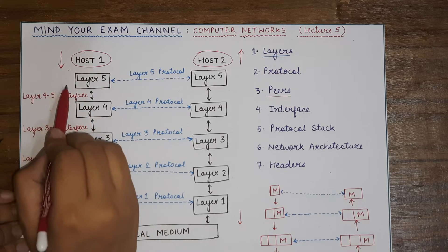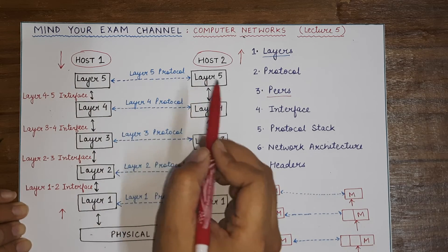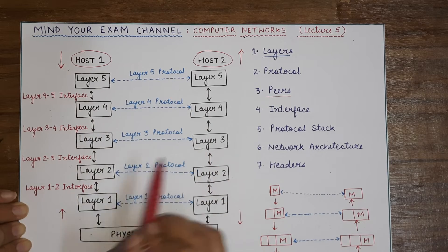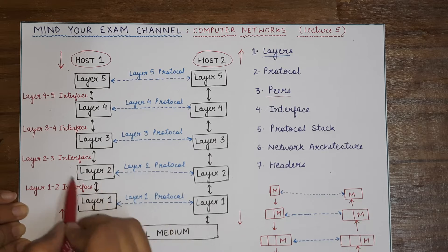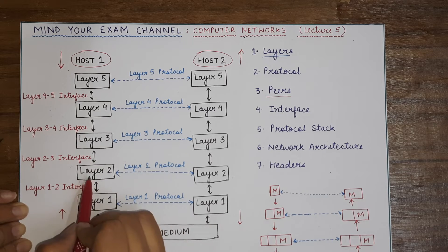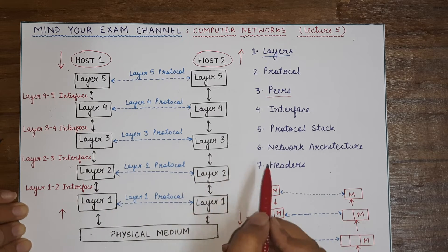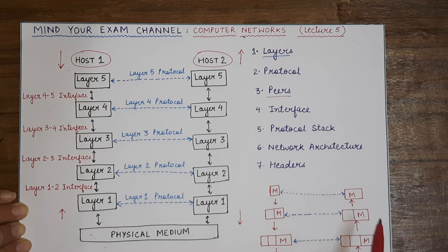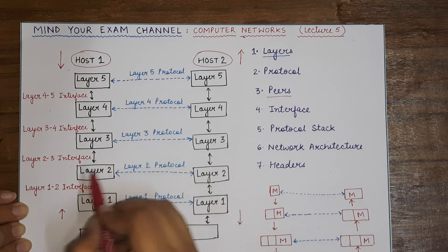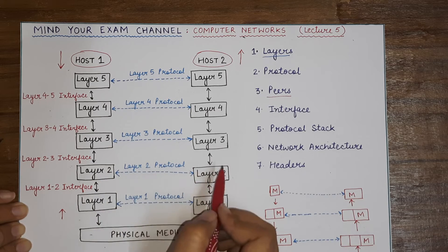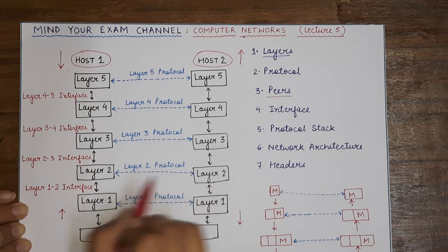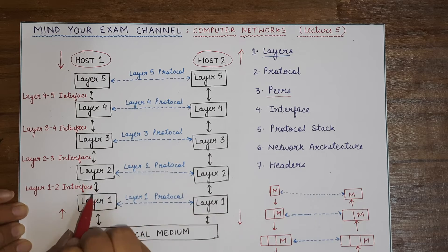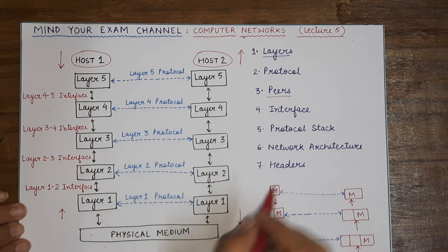A simple example of a protocol: if you know English and your friend knows Spanish, you need a set of rules to communicate — such as agreeing on a common language or a data speed so that the other person can understand. This is essentially what a protocol is. Now, a peer refers to the processes, software, and hardware working at corresponding layers of communicating devices.